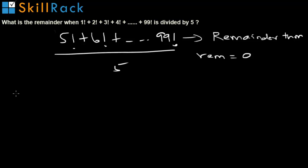Now taking the first part, 1 factorial plus 2 factorial plus 3 factorial plus 4 factorial divided by 5. The remainder of this block will be the remainder for the entire series, that is, 1 factorial plus 2 factorial till 99 factorial.